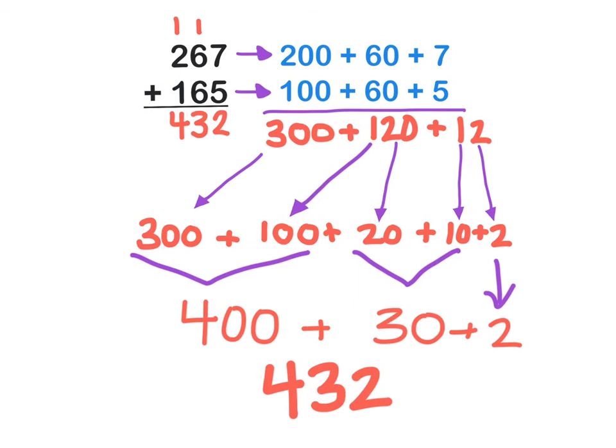Another thing we had to do when we solved the old way was to carry the ones, as we used to call it. Well, we don't call it carrying anymore. We call it regrouping. And the purpose of this is because it's not really a 1 that we put in the tens place or in the hundreds place. It's a 10 in the tens place and a 100 in the hundreds place. And let me show you where that is in our new strategy.